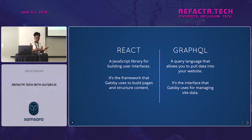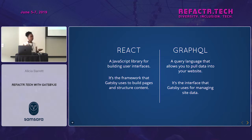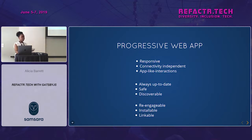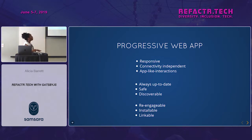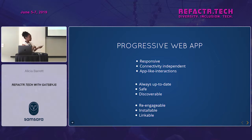React is a JavaScript library for building user interfaces. GraphQL is a query language that allows you to pull data into your website. A progressive web app — Gatsby.js is essentially a progressive web app generator, because the site you generate already has the tools built in to meet those standards: it's responsive, app-like, and installable. By installable, we mean that if you visit a qualifying site on your phone you might get a prompt to install it on your home screen.